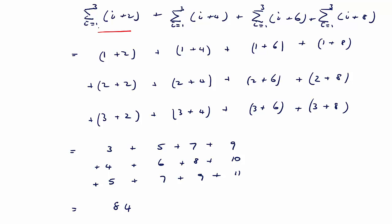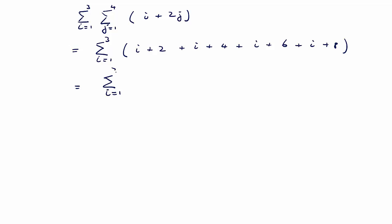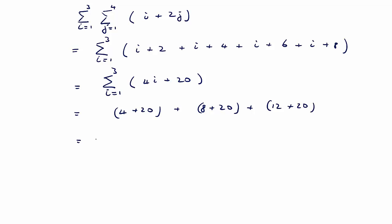In this case there's a simpler way of approaching the problem. We can start with the column elements: i plus 2, plus i plus 4, plus i plus 6, plus i plus 8. Adding up the numbers gives 4i plus 20 — since 2 plus 4 plus 6 plus 8 equals 20 — and then we sum from i equals 1 to 3. That gives 4 plus 20, plus 8 plus 20, plus 12 plus 20, which equals 84 again.